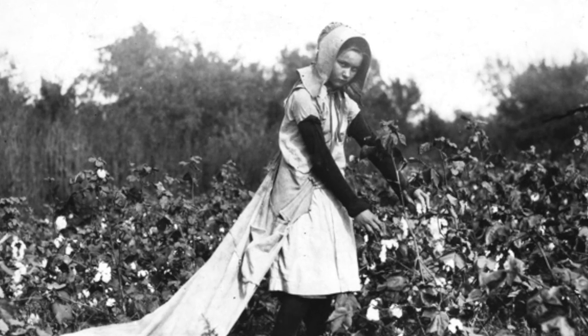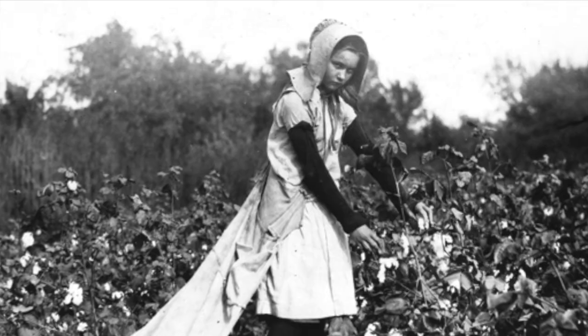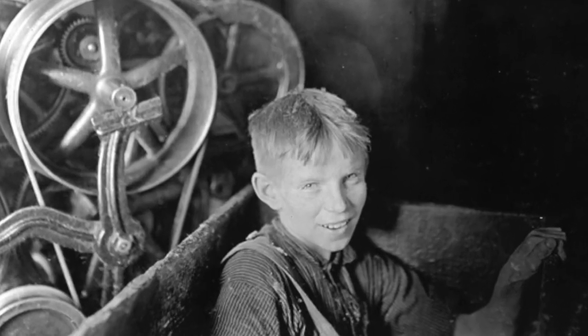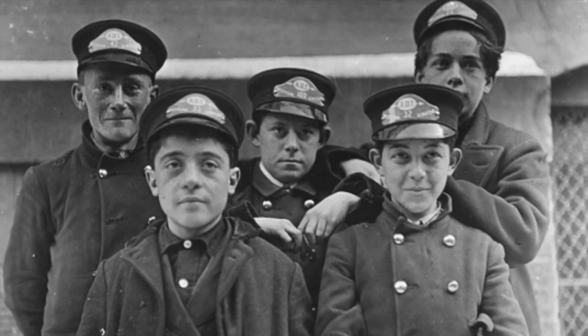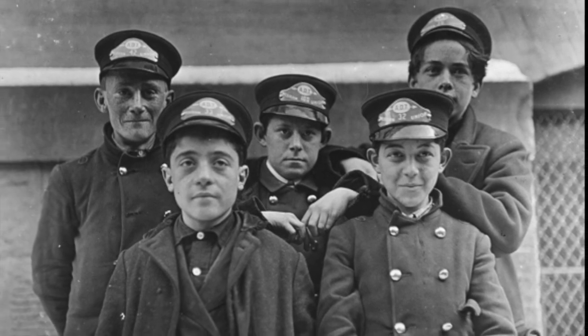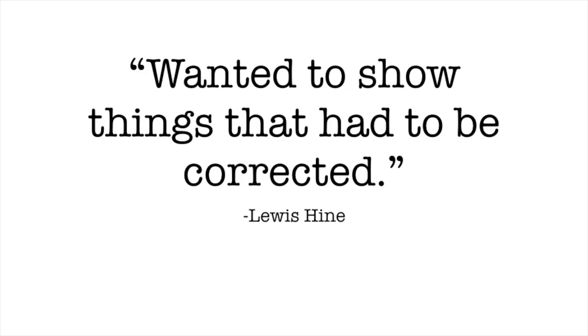Lewis Hine lowered his camera so viewers are looking at the children at eye level rather than from above — that is important, as it gives the subjects more respect. Hine knew that the photographs he was taking had the potential to assist in the fight against child labor. When asked why he wanted to photograph the young laborers, he replied that he wanted to 'show things that had to be corrected.'